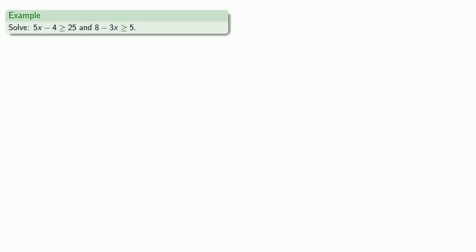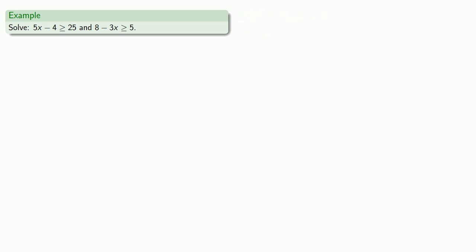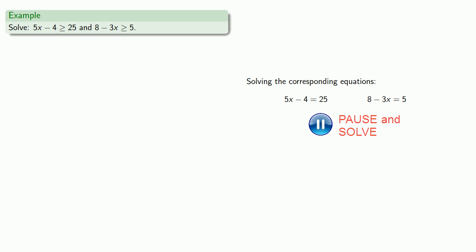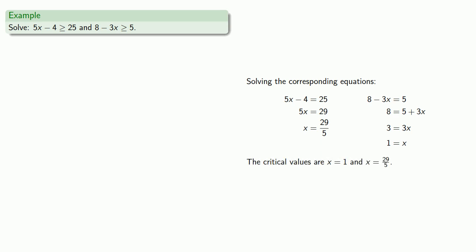What if we have an AND inequality? We'll solve the corresponding equations. This gives us critical values x equals 1 and x equals 29 fifths. And remember, a good math student remembers that the inequality exists, so we do have to check our critical values. Because this is an AND inequality, both inequalities must be satisfied by any solution.